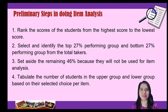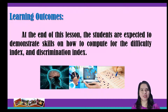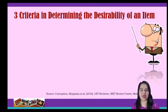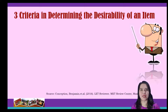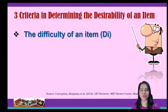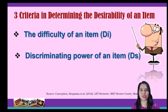Today, we will be discussing the item analysis based on the given table. The learning objective for this lesson is to demonstrate skills on how to compute the index of difficulty and discrimination index. Before we discuss how item analysis is done, we need to understand the three criteria that determine the desirability and undesirability of an item, based from Percival 2016: the difficulty of an item, discriminating power of an item, and effectiveness of alternatives.